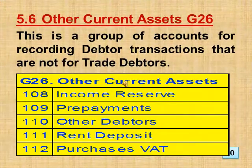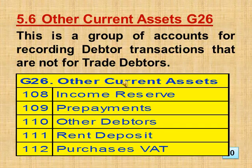Section 5.6 Other Current Assets, Group 26. This is a group of accounts for recording debtor transactions that are not for trade debtors. This includes: income reserve, prepayments, other debtors, rent deposit, and purchases VAT.